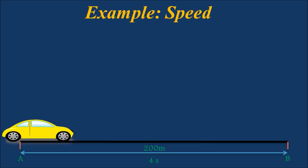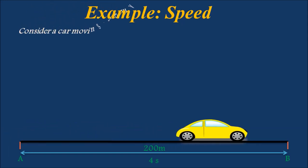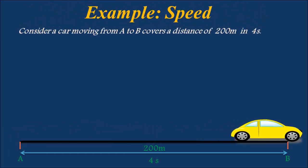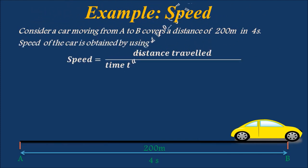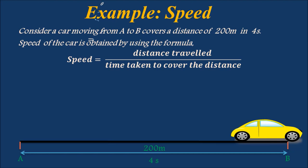Consider a car moving from A to B, covering a distance of 200 meters in 4 seconds. Speed of the car is obtained using the formula: speed equals distance traveled divided by time taken. That equals 200 divided by 4, which is 50 meters per second.